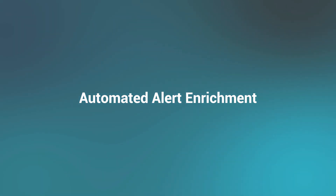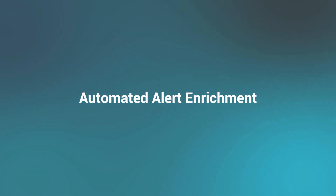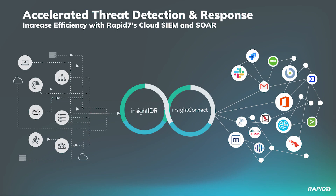Today's security teams need visibility across their modern environment for a number of reasons — not only for compliance, but also to find, investigate, and contain unauthorized access to critical data. Automation allows teams to scale across the entire threat detection and response process. Let's look at how using Rapid7 Insight IDR and Insight Connect together can help teams save time, formalize security processes, and take action with the context and confidence they need.